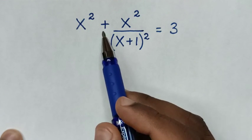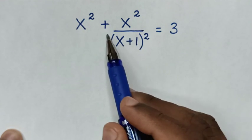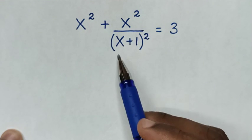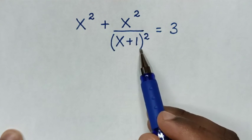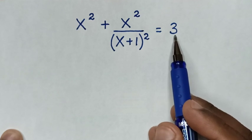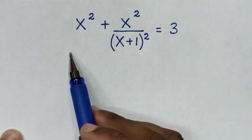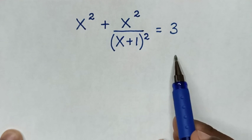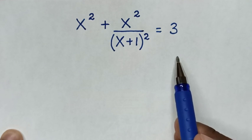How to solve x squared plus x squared over (x plus 1) squared is equal to 3, to find the values of x from this equation.